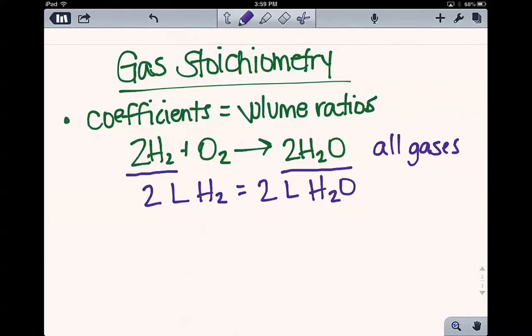And so you can set up a stoichiometric conversion factor where you have two liters of H2 over two liters of H2O. And just like with mole ratios, if the numbers are the same, then of course these guys would reduce or simplify down to a one and a one. But this can only be done if all of the conditions stay the same.